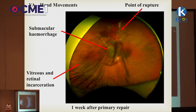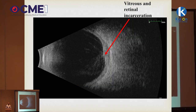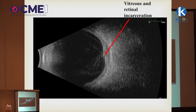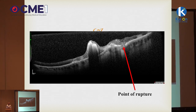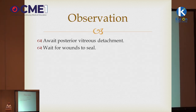The B-scan ultrasound nicely confirms vitreous and retinal incarceration at the rupture site. On OCT, because it's a quite posterior rupture, you can actually see the point of rupture — the RPE band is discontinuous and there's a significant defect in the choroid as well.